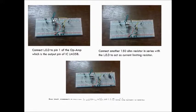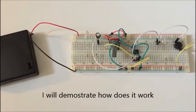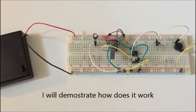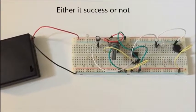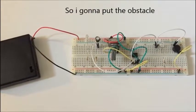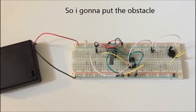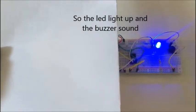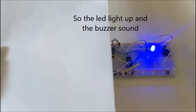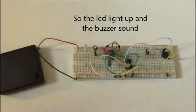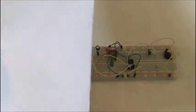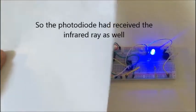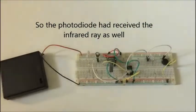And lastly, connect buzzer in parallel with LED and the circuit is done. Now, I will demonstrate how it works, whether it's a success or not. So, I'm going to put the obstacle. So, the LED lights on and the buzzer sounds. So, the photodiode has received the infrared. That's why the LED turns on.